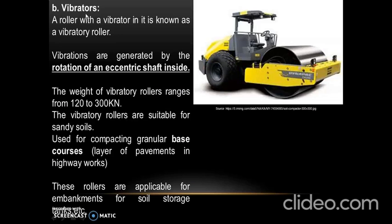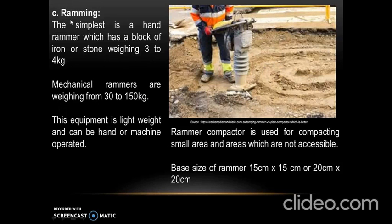Next is the vibratory roller. A roller with a vibrator in it is called a vibratory roller. Vibrations are generated by the rotation of an eccentric shaft inside. The weight of the vibratory roller ranges from 120 to 300 kN, and these rollers are suited for sandy soils. They are also used for compacting embankments for soil storage tanks.